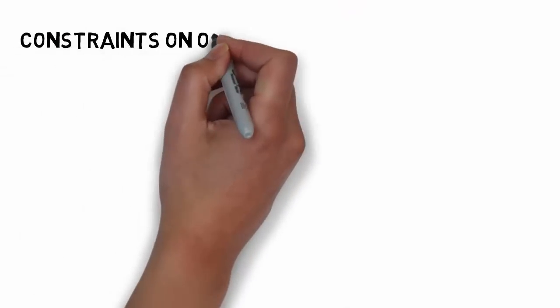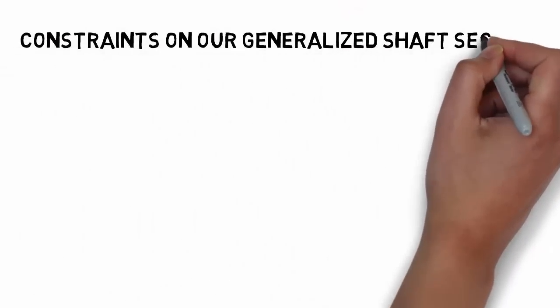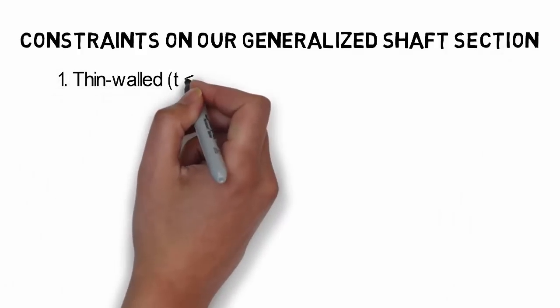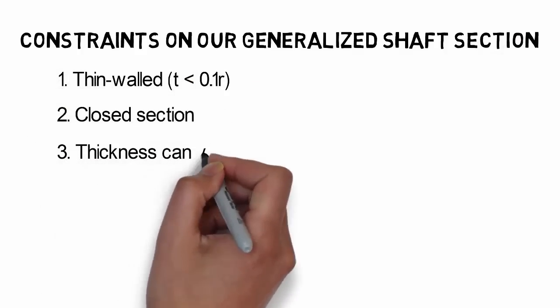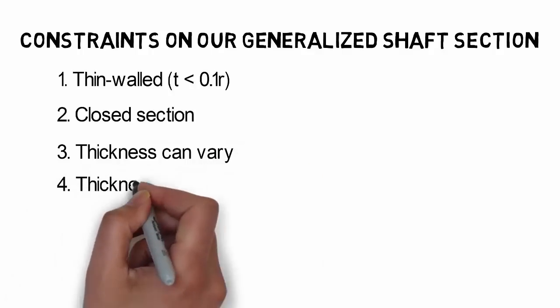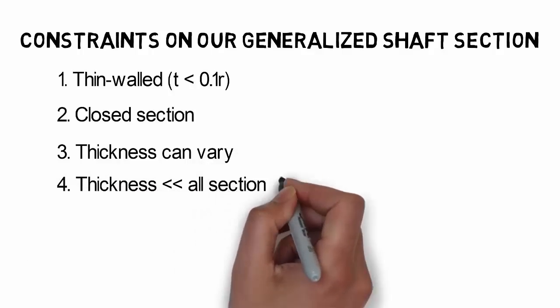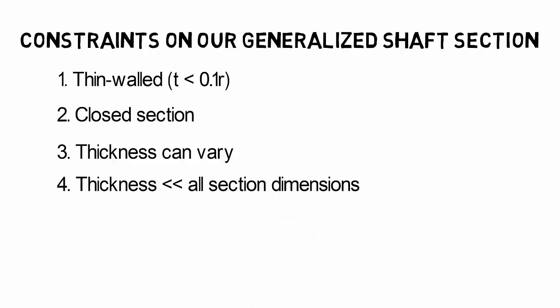To generalize our analysis we will consider an arbitrary thin walled shaft with a closed cross-section subjected to torsion. We will allow the thickness to vary around the cross-section, however the thickness at every location must be much smaller than the distance of the cross-section perimeter to the central axis of the shaft.